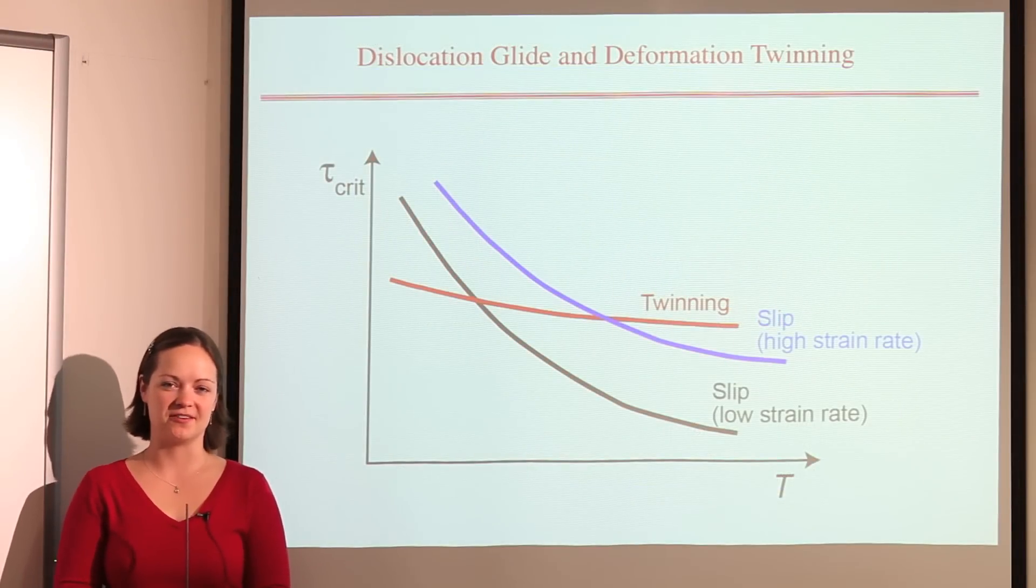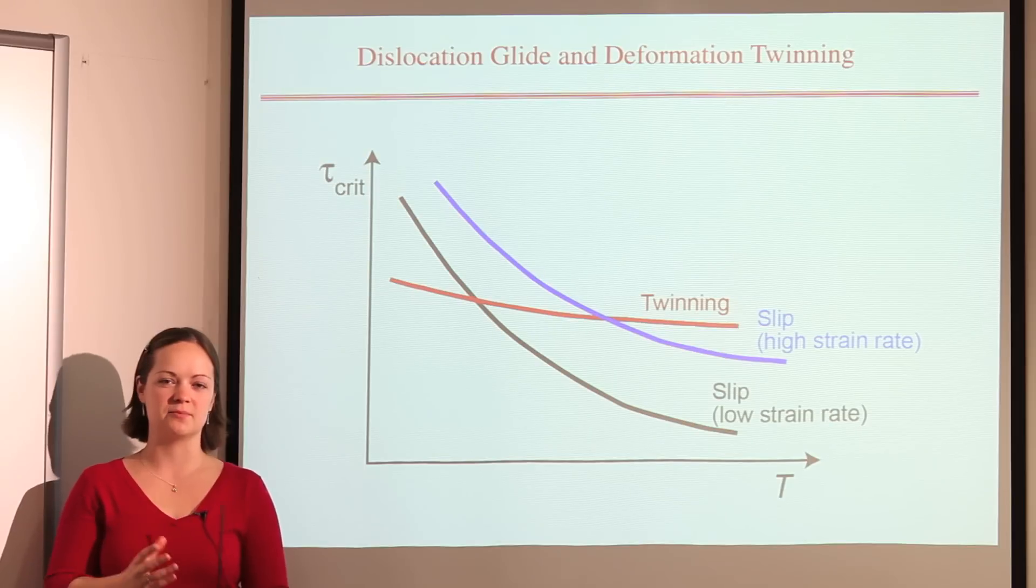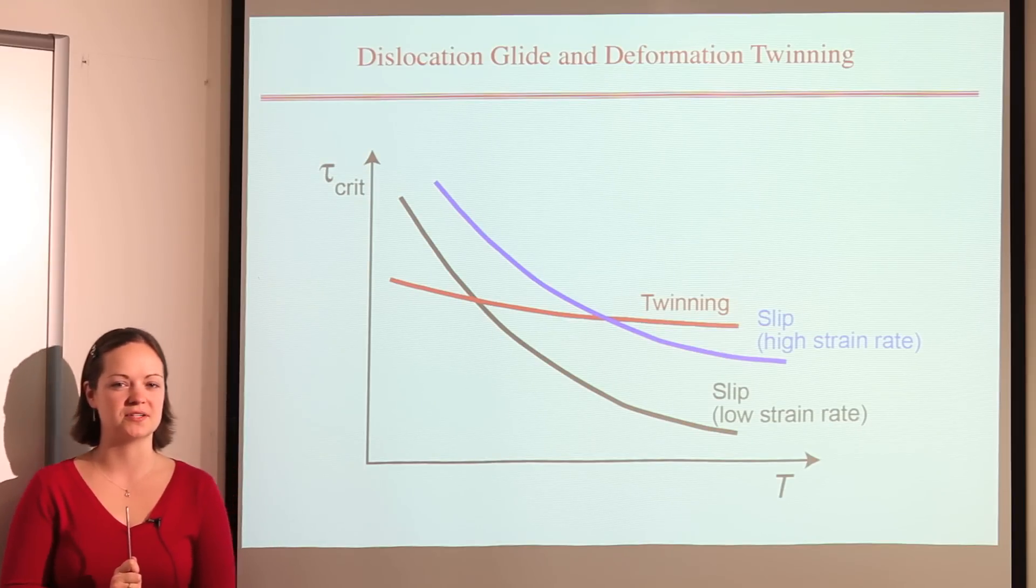You'll have noticed that no noise was generated in the sample at 100 degrees. The reason for this is related to the relative ease with which deformation twinning and dislocation motion take place.